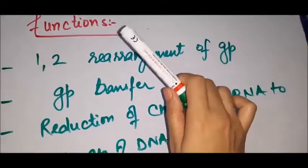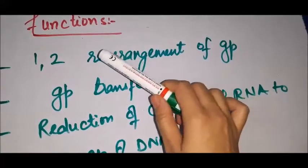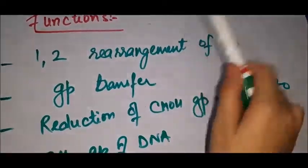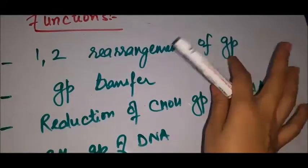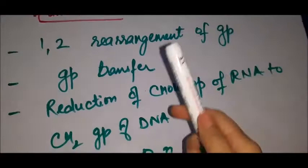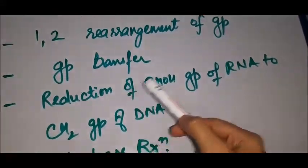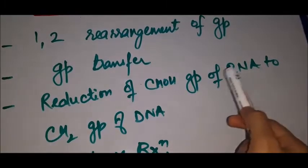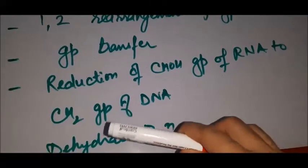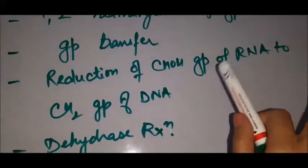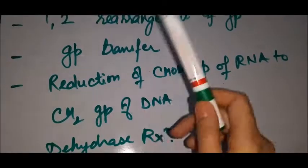The functions of vitamin B12 and coenzyme B12 are very important — there are 4 functions. First, rearrangement of groups. Second, group transfer. Third, reduction of the C–OH group of RNA to the C–H2 group of DNA. Fourth, dehydration reaction, which involves water removal. Remember these four functions.